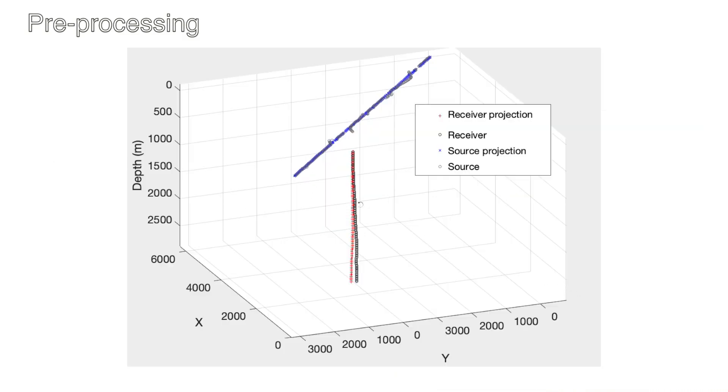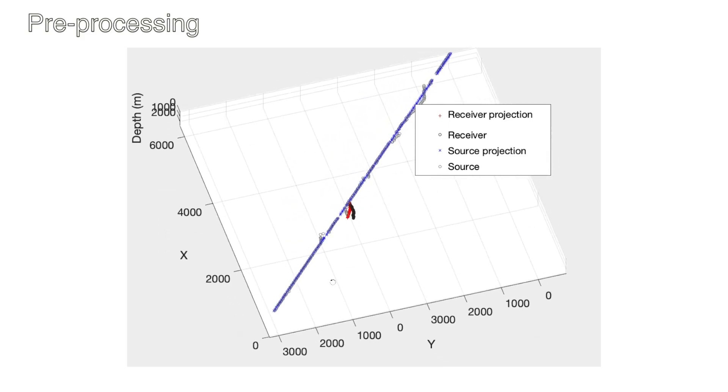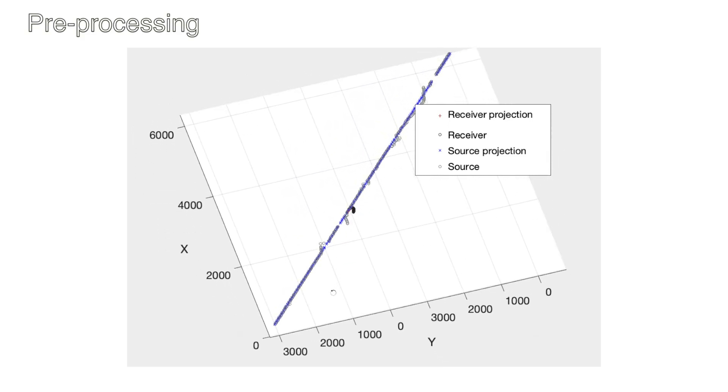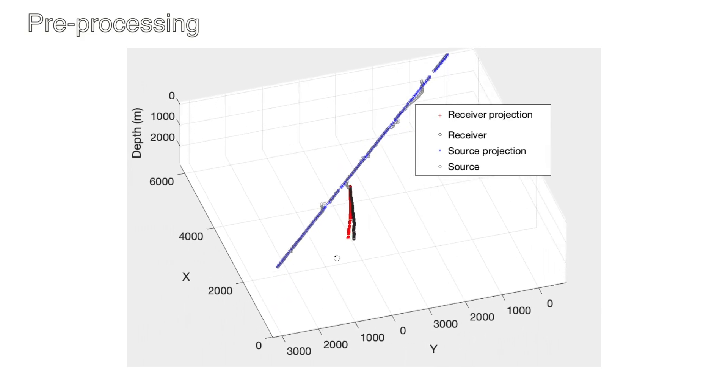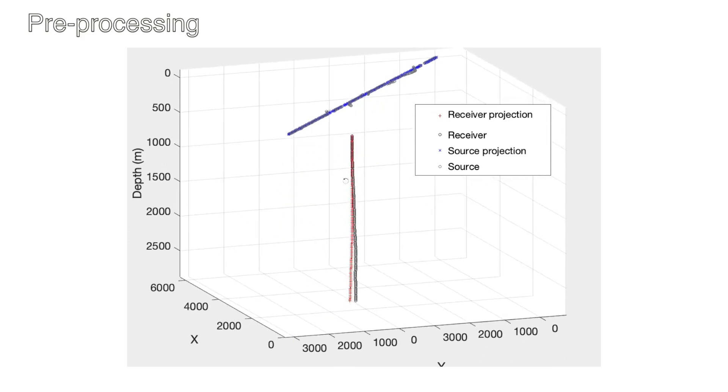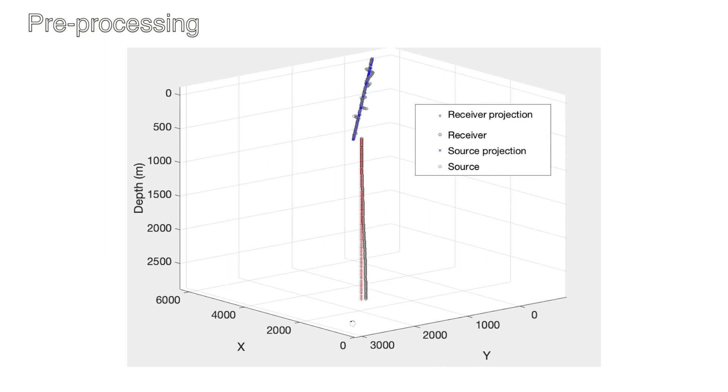During acquisition, the walkaway line has some minor deviations and discontinuities in the areas with local infrastructures, while the borehole is slightly deviated at the bottom. Since the acquisition system still largely remains as a 2D system, we simplified the issue by projecting both shot and receiver arrays onto a 2D plane.